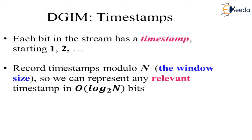DGIM uses timestamps. Each bit in the stream has a timestamp starting with 1, 2, and so on. Suppose at a particular time, incoming data is assigned timestamp 1, and the previous data that arrived is assigned timestamp 2 on the left-hand side, with respect to time. We record the timestamp modulo n, the window size. We can represent any relevant timestamp using order of log n (base 2) bits.